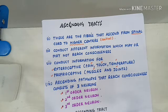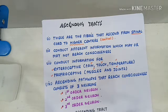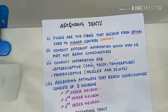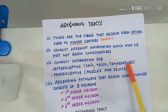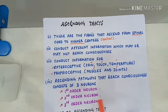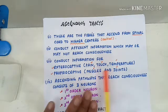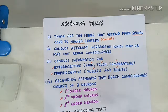These ascending tracts conduct the afferent information which may or may not reach the consciousness. They conduct the information for the exteroceptive — which includes pain, touch, and temperature — and they also conduct the information for the proprioceptive, which relates to muscle tone and information about the joints.